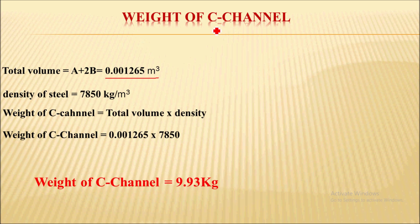As we know, C channel is a structural steel, so we will consider the density of steel which is 7850 kg/m³. Weight of C channel equals total volume times density. We multiply and get the result: weight of C channel will be 9.93 kg.